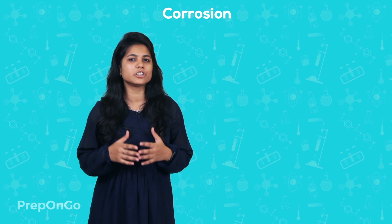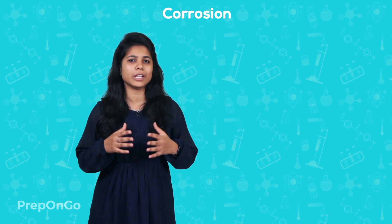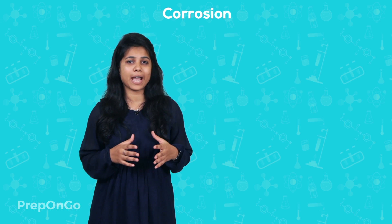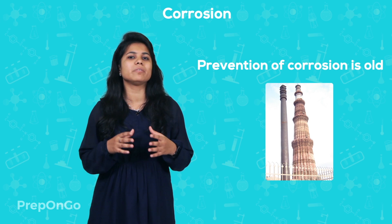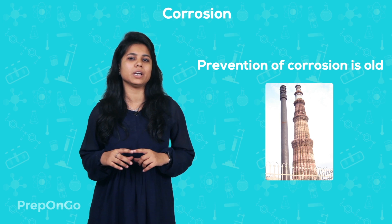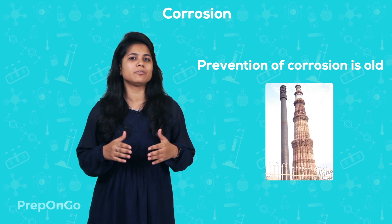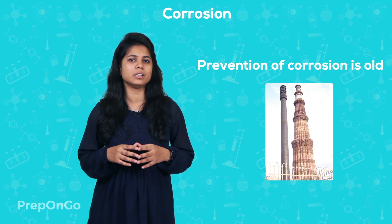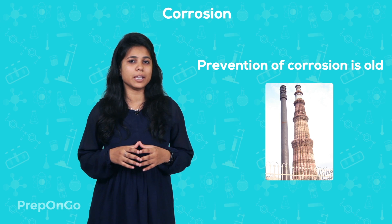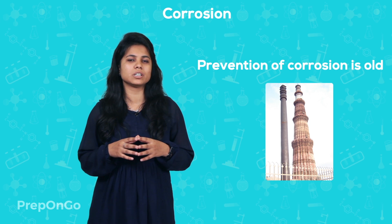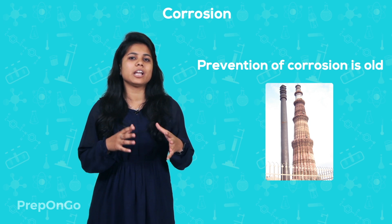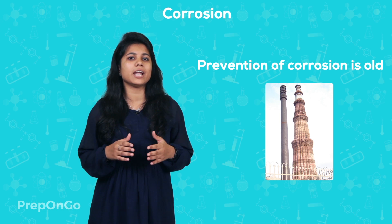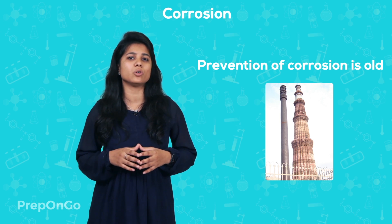The prevention of metals from corrosion is a very old technique. Our ancestors used it as far back as 400 BC to protect the iron pillar near Qutub Minar. They did so by forming a magnetic oxide layer on the pillar and then painting it with a combination of salts, followed by heating and quenching. In this way, we can see that prevention from corrosion is an ancient technique.